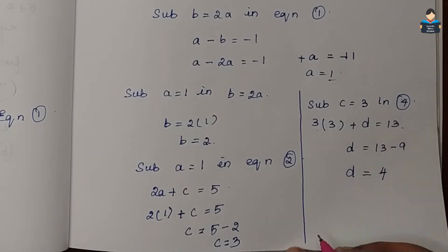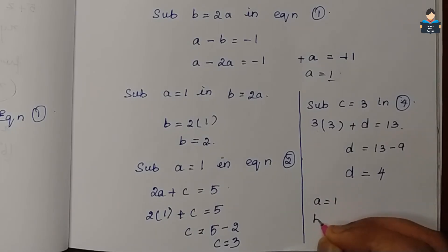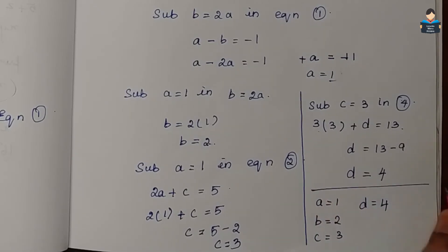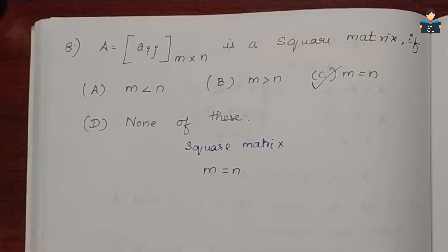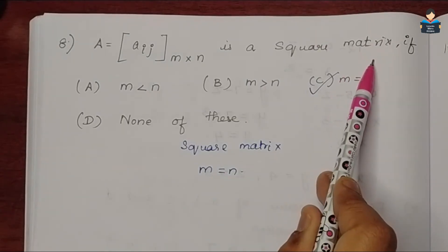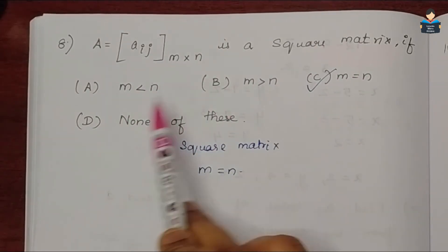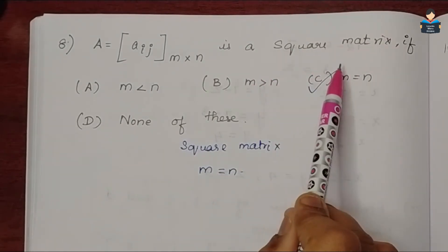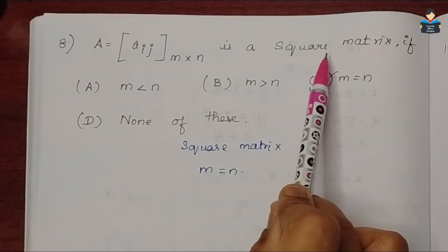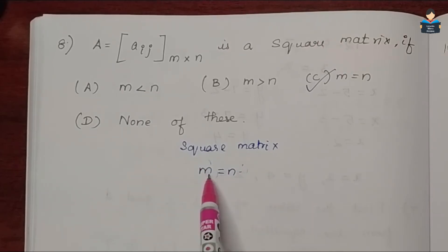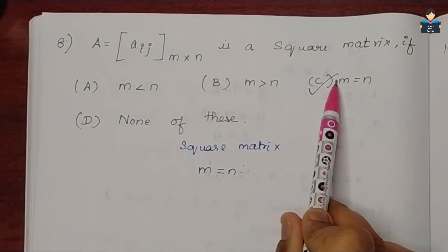So the values are: a equals 1, b equals 2, c equals 3, and d equals 4. Question 8 asks about a square matrix. Since a square matrix has equal number of rows and columns, m and n will be equal. So option C is the correct answer.